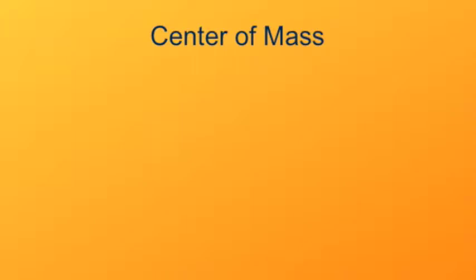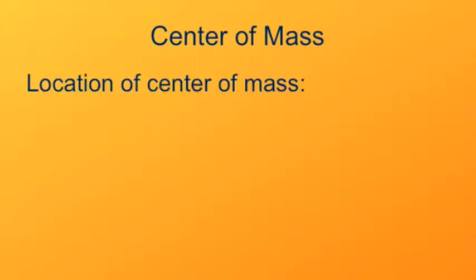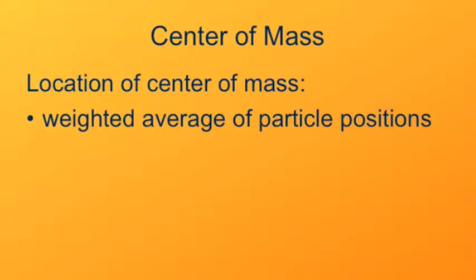So first we'll define how we can calculate the center of mass of a set of objects. Basically, it's a weighted average of particle positions. So here's our definition. The location r of the center of mass of a system of objects is equal to the summation of the products of their individual masses times their individual positions, that summation divided by their total mass.